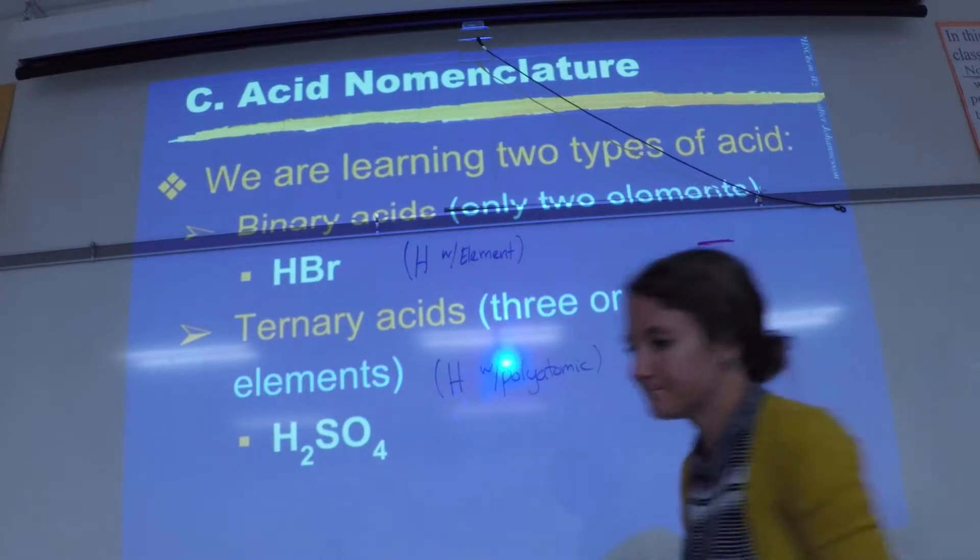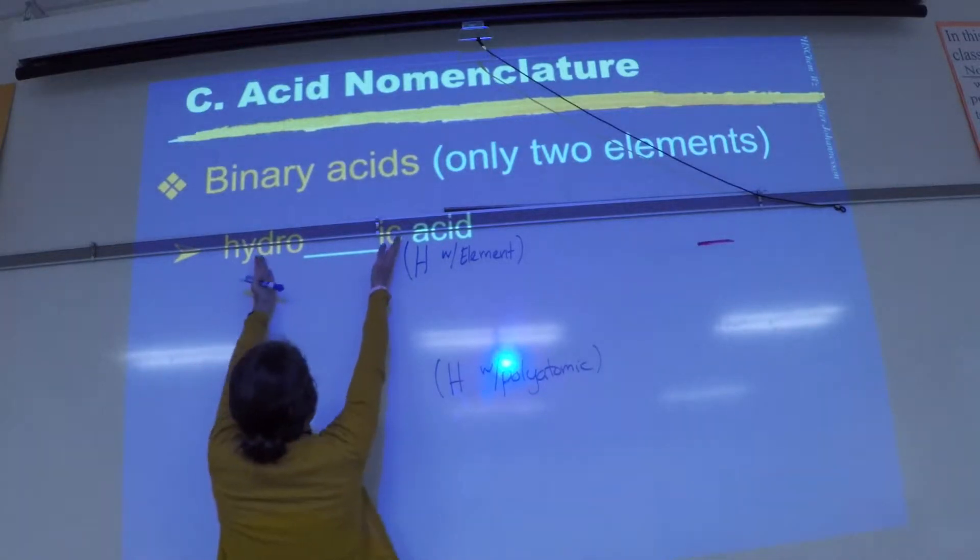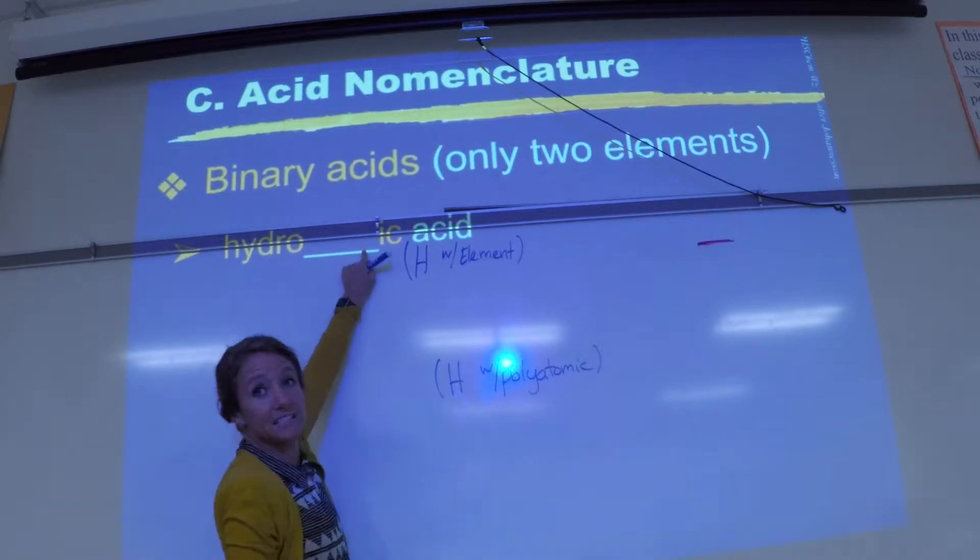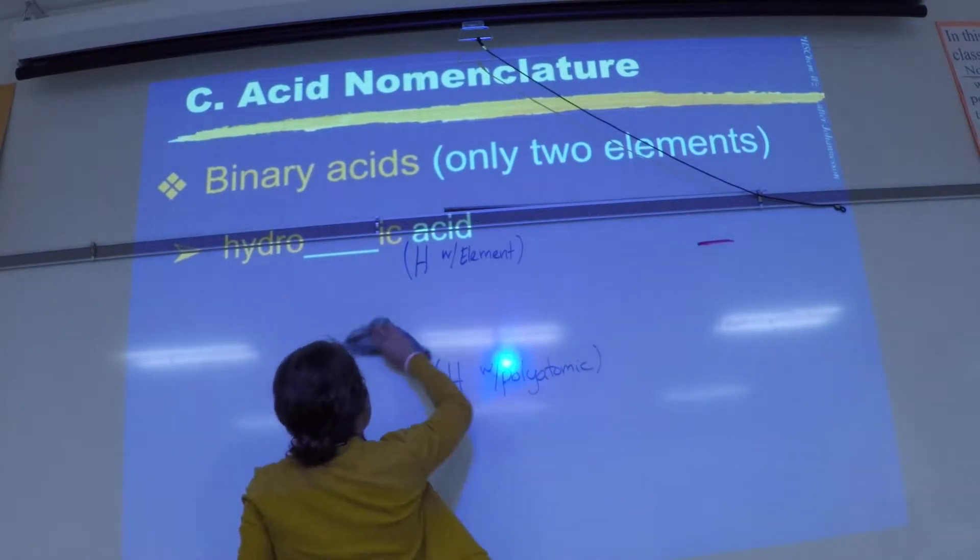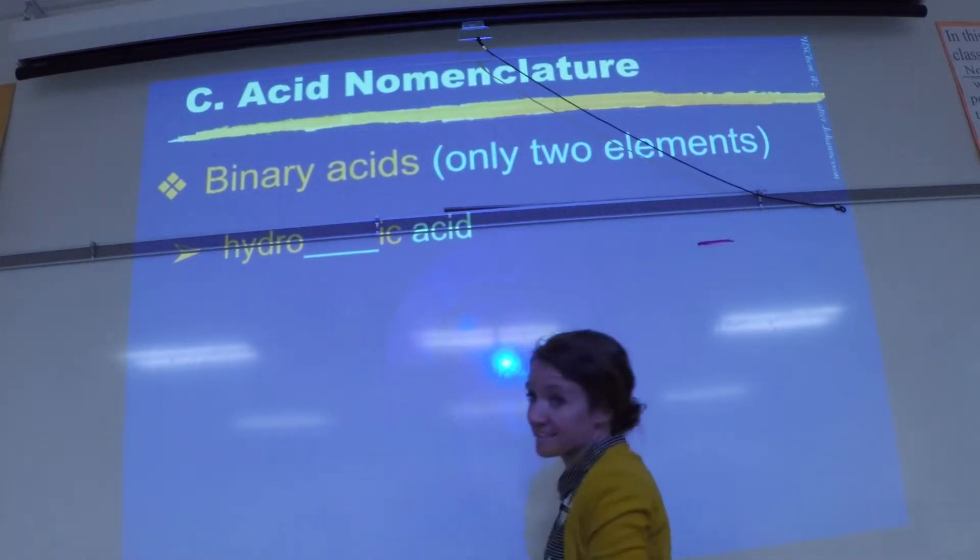So in our naming, if it is binary, meaning it came from the periodic table, this is the format you always use. If it's a binary acid, you put hydro in front of the name, you squish the element into the middle changing the ending to ic, and then you write the word acid at the end.